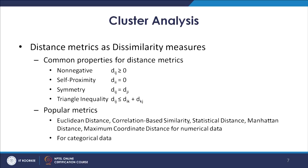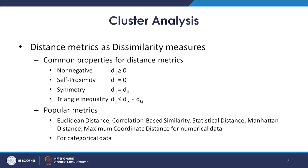Some popular distance metrics include Euclidean distance, correlation-based similarity, statistical distance, Manhattan distance, and maximum coordinate distance. All these metrics are typically for numerical data. For categorical data there are also a few metrics that will be covered in coming lectures.